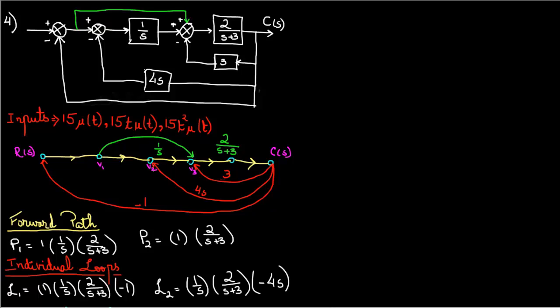First, you write your forward path which is going to be 1 times 1 over s times 2 over s plus 3. Your second forward path is going to be 1 and as you see this line going over, so you're gonna have 1 again and then 2 over s plus 3. So that's going to be your second forward path. Now we don't have anything else going in the direction of c of s so we don't have any more forward paths.